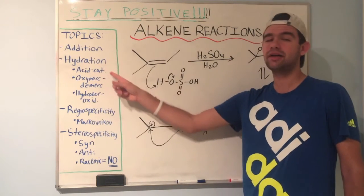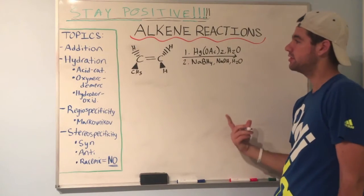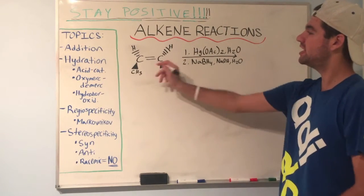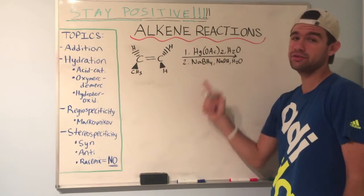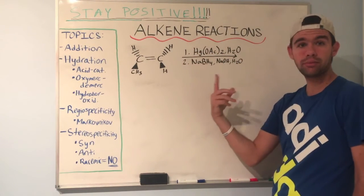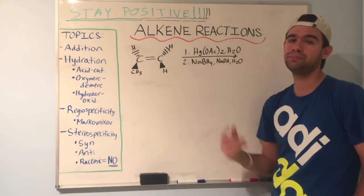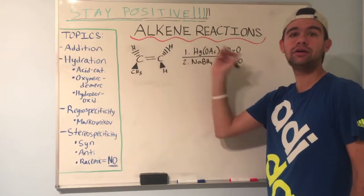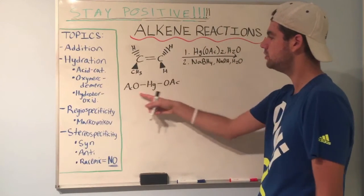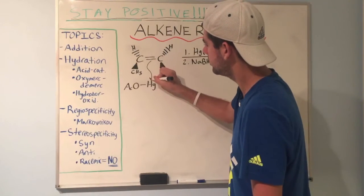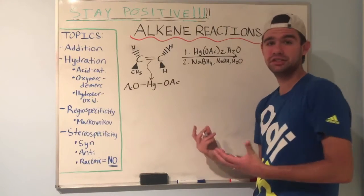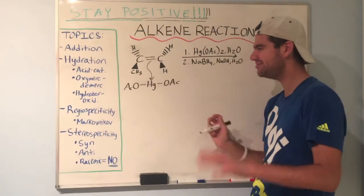Now let's move on to the second type of hydration: oxymercuration-demercuration. This is the basic setup — it looks a little intimidating, but don't worry. We see here an alkene with two steps. First step: HgOAc2 and water. Second step: NaBH4, NaOH, and H2O. We need to memorize all of these reagents. So here we have our HgOAc2; the nucleophilic pi bond is going to grab this Hg. We don't really need to know the full mechanism — teachers typically just want to see the intermediate, and it looks like a closed ring formed between the carbons and the HgOAc.